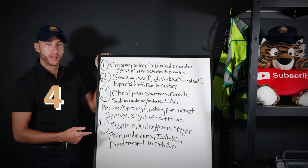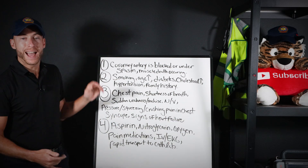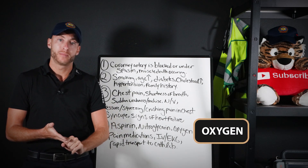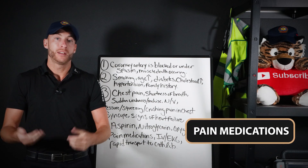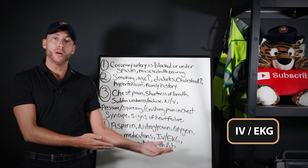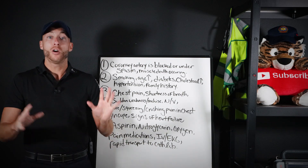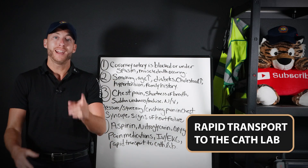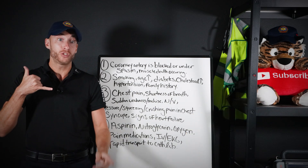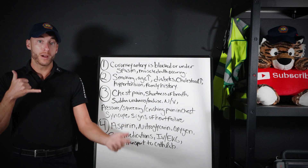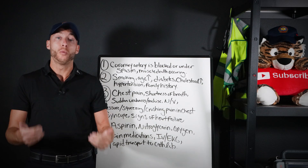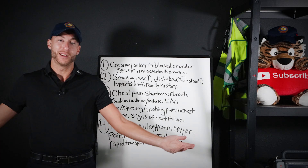Number four — how do we treat it? Aspirin, nitroglycerin, oxygen, pain medications, get as many IVs as you can, perform a 12-lead EKG and cardiac monitoring, rapid transfer to the hospital, get that patient to the cardiac cath lab, and radio in as soon as you suspect a heart attack. When you radio in, they're going to say: open up the cath lab.